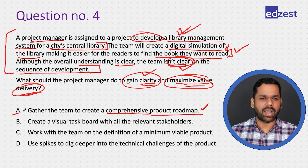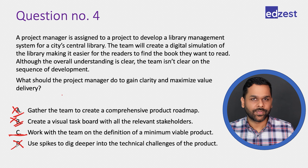Comparing options: a comprehensive roadmap was already questionable, and the task board doesn't clarify priority, but MVP will definitively tell us the priority and maximize value. Eliminate A and B. Option D: Use spikes to dig deeper into technical challenges. Nothing in the question suggests there are technical problems requiring a spike — it's a decision not backed by the information given. Eliminate D. Option C — MVP — is the best choice.